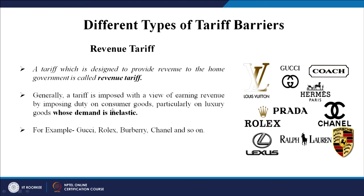The government imposes some duty particularly on luxury goods whose demand is inelastic. Luxury goods are costly goods purchased by people who have high purchasing power, so on such goods a tariff is generally imposed so that the government can earn more revenue. Examples are Gucci, Rolex, Burberry, Chanel and so on.